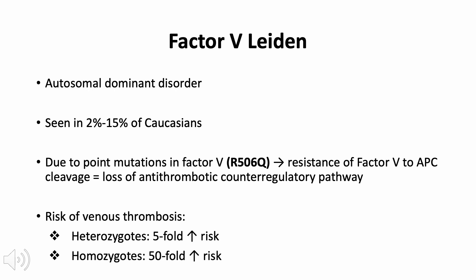The first hypercoagulable state is Factor V Leiden. This is an autosomal dominant disorder due to a point mutation in factor V where arginine is substituted by glutamine. This mutation renders factor V resistant to cleavage and inactivation by activated protein C, resulting in loss of an important antithrombotic counter-regulatory pathway.